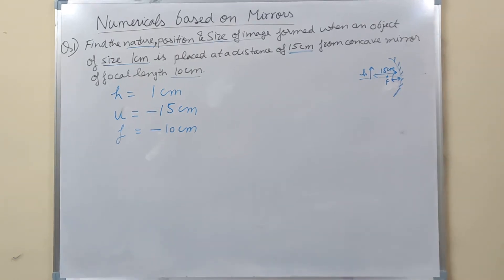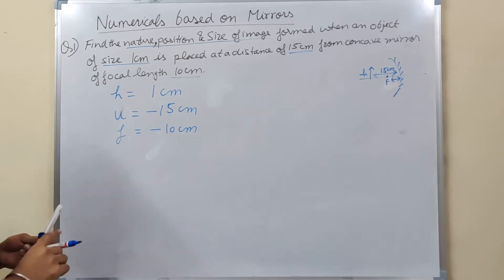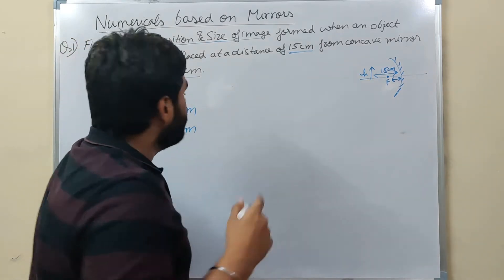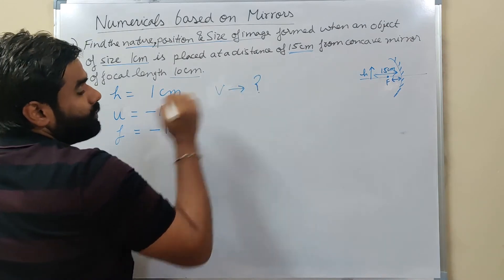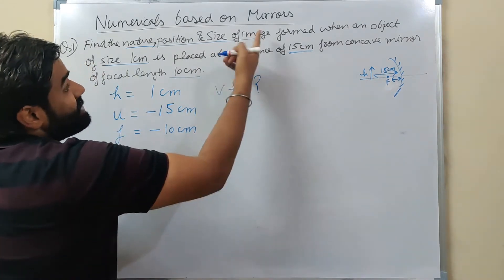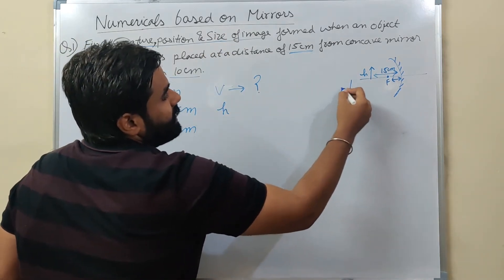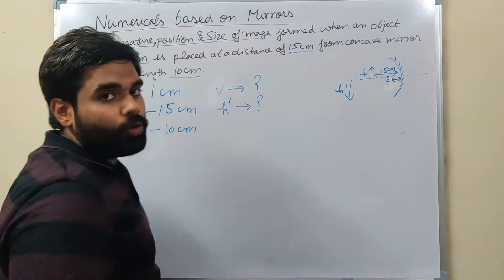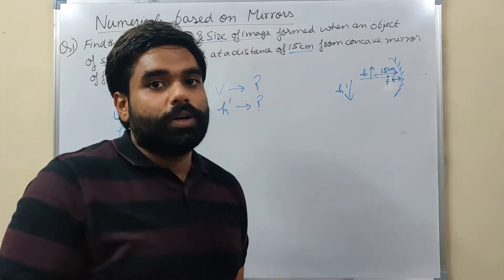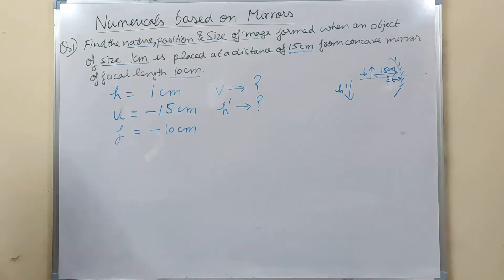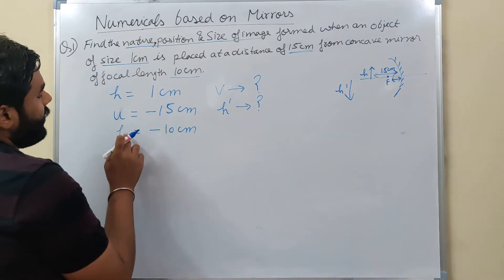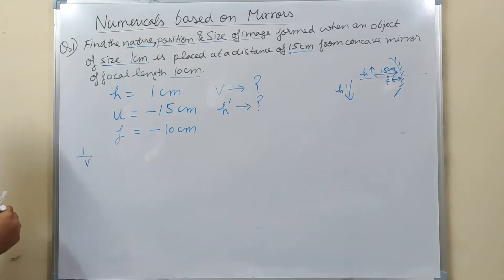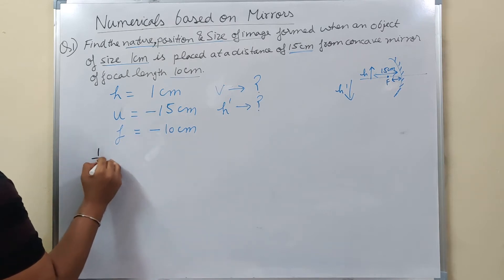So that is given to us. Now what do we not need to find? Nature - that will be found later. For position of image, I need to find V. Position of image means how far is the image. For size of image - denoted by h-dash - I need to find h-dash. Nature: if negative comes, it is real and inverted. Let's apply the mirror formula. 1/V + 1/U = 1/F.